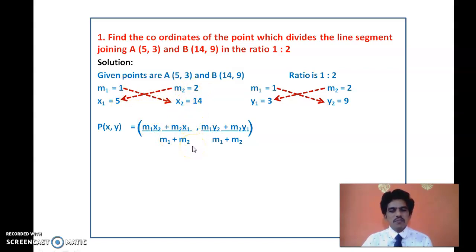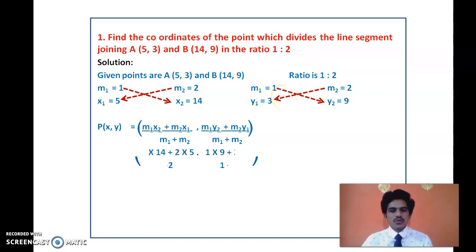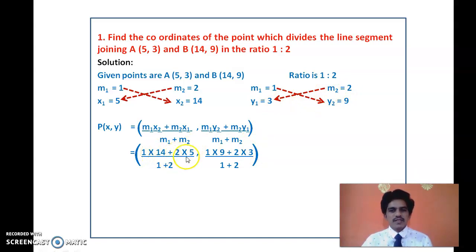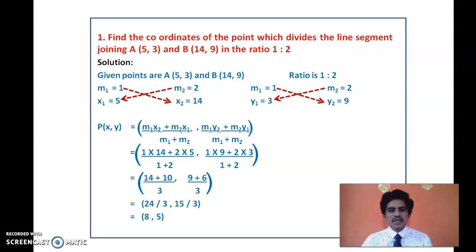For the y-coordinate: y = (1×9 + 2×3) / (1 + 2). So we have x = (14 + 10) / 3 = 24/3 = 8, and y = (9 + 6) / 3 = 15/3 = 5. So the coordinates of point P are (8, 5).